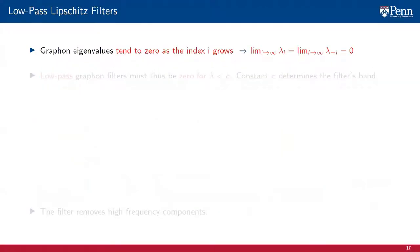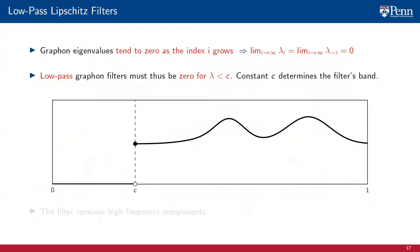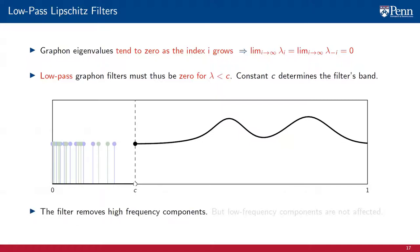We start with low-pass Lipschitz filters. As graphon eigenvalues tend to 0 as the index grows, low-pass filters must be 0 for all eigenvalues below a certain threshold C, with the constant C determining the filter's band. The filter removes high-frequency components, that is, the eigenvalues of the graphon closer to 0. But low-frequency components are not affected.